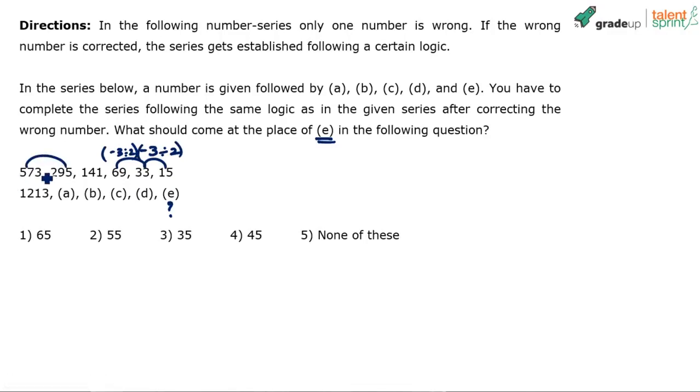Look at the first two numbers also. 573 minus 3 is 570, divided by 2 is 295. Right? Or no? No, it's not 295, it's 285. It's supposed to be 285. So basically, the wrong number is 285. You understand? This should be 285.